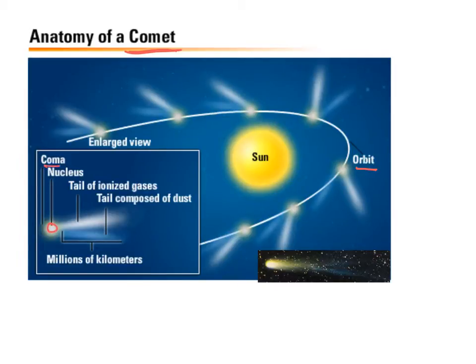It also has a tail of ionized gases and a tail of dust, and what we notice is this tail of dust is always facing away from the sun, same with the ionized gases. So as it orbits around the sun the tail doesn't necessarily trail the coma, it's going to be blown away from the sun.